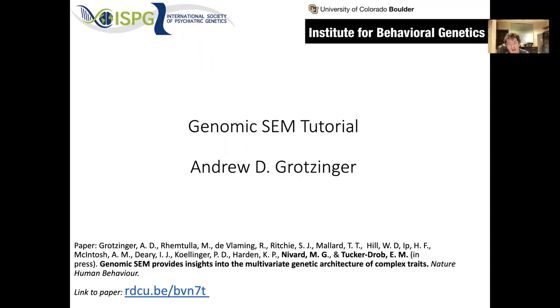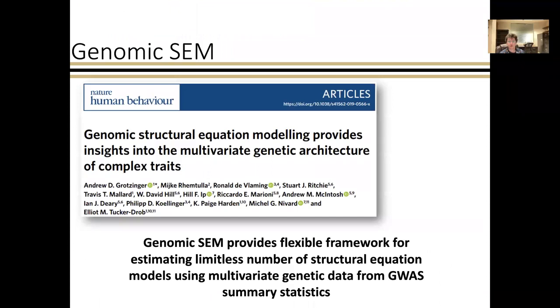I'm Andrew Grotzinger, and in this video we're going over how to run GenomeXem using psychiatric traits as examples. GenomeXem is a general framework for modeling genetic covariance matrices produced by methods like LD score regression to estimate structural equation models that test hypotheses about the processes that gave rise to observed data. It only requires GWAS summary statistics from samples with unknown and varying degrees of sample overlap, meaning you can now estimate models for really rare traits not otherwise observed in the same sample.